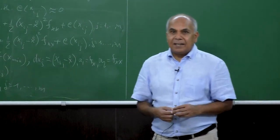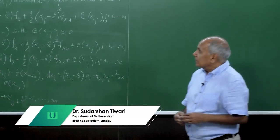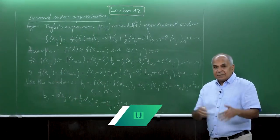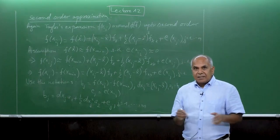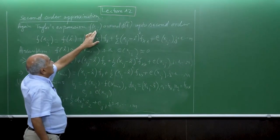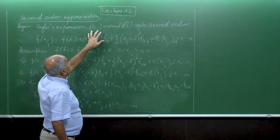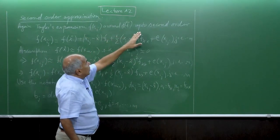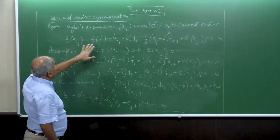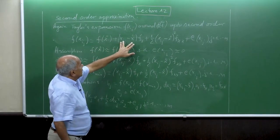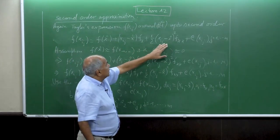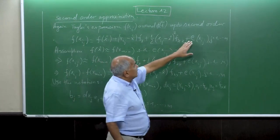Welcome back again to our next lecture. This is just a continuity of my previous lecture, where I had just introduced the second-order Taylor expansion. Now it is the second-order Taylor expansion of the function f(x_ij), which is the neighbor of x_0. We expand around f(x_0) up to second order, which is given as: f(x_ij) equals f(x_0) plus the difference between neighbor and center times the derivative, plus that squared times the second derivative, plus the error term.